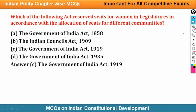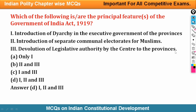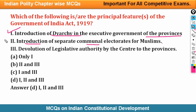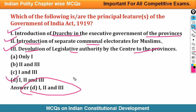Next question: Which act reserved seats for women in the legislature in accordance with the allocation of seats for different communities? The answer is Government of India Act 1919. Next question: What are the principal features of the Government of India Act 1919? Correct features include: (1) introduction of Diarchy in the executive government of the provinces; (2) introduction of separate communal electorate for Muslims; (3) devolution of legislative authority by the centre to the provinces. All three are correct, so option D is the answer.